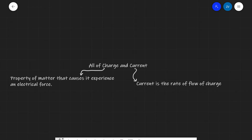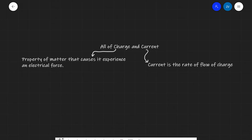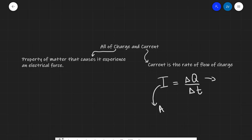Now, what do we actually need to know for the exam? First off, we need to know that current is the rate of flow of charge. In physics, any time we're talking about the rate of something, we're dividing by delta t, the change in time. So the current is defined as the change in charge divided by change in time. Current is measured in amps, charge in coulombs, and time in seconds.